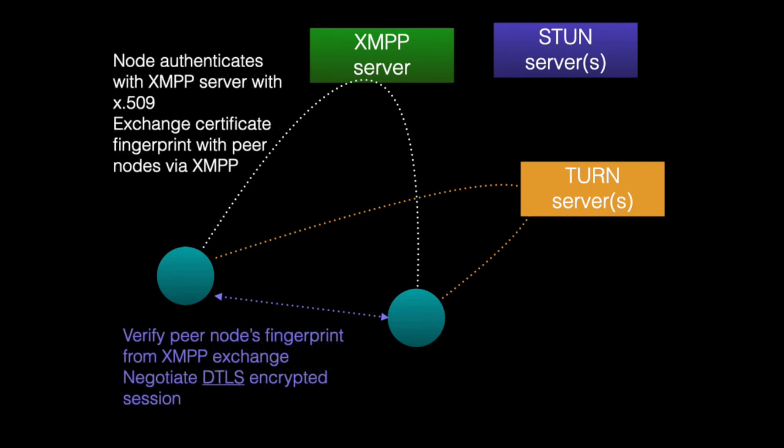A node can authenticate with the XMPP server using a username and password or an X.509 certificate. It locates other nodes using XMPP messages and then exchanges fingerprint information as well as the endpoints — STUN or TURN — to allow creation of a P2P tunnel.